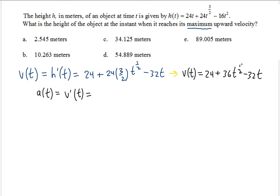The constant 24 is gone. Then 36 multiplies the 1/2, so it becomes 18, and the power 1/2 is reduced by 1 — subtracting 2/2 from 1/2 gives negative 1/2. So t to the negative 1/2 is the same as writing 1 over the square root of t. Finally, the last term gives minus 32, because the 1 comes down and multiplies the 32, and t to the 0 is just 1. So the acceleration function is a(t) = 18/√t − 32.